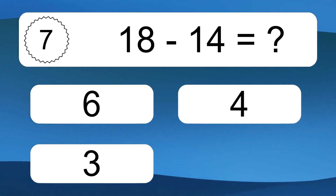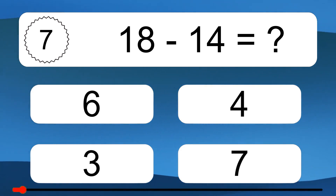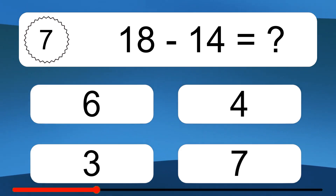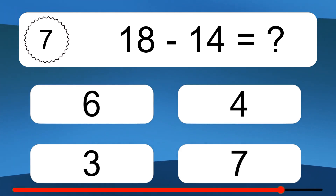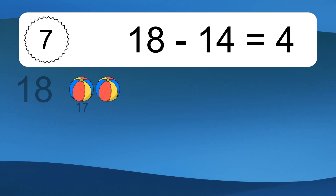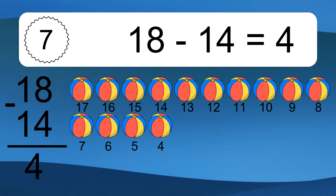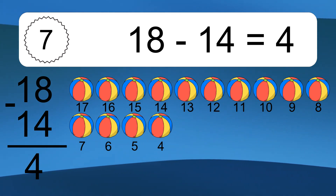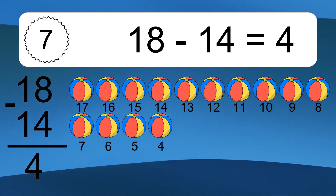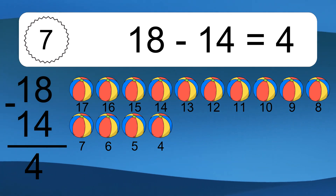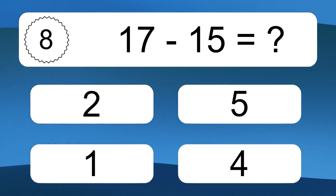18 minus 14 equals what? 18 minus 14 equals 4. Let's count it. 17, 16, 15, 14, 13, 12, 11, 10, 9, 8, 7, 6, 5, 4.